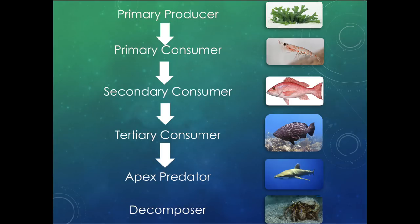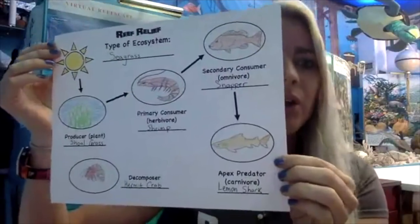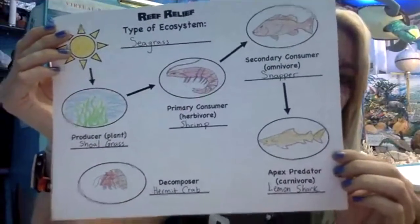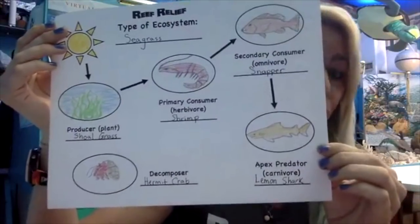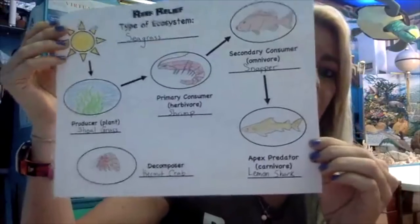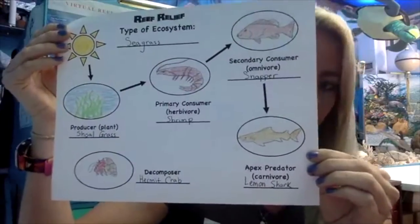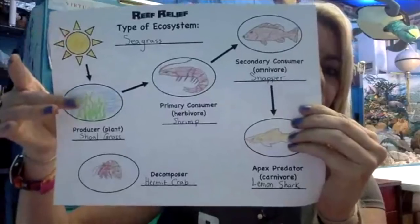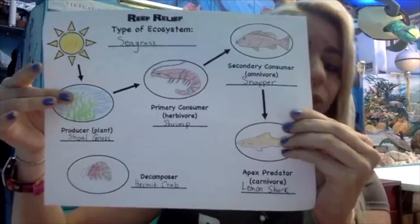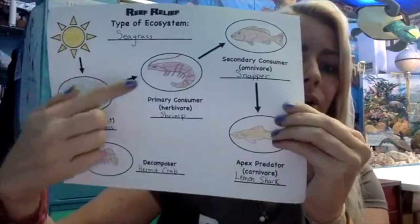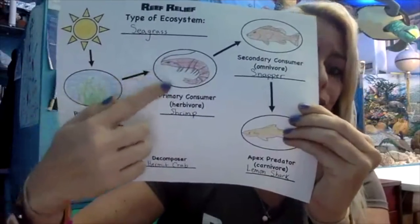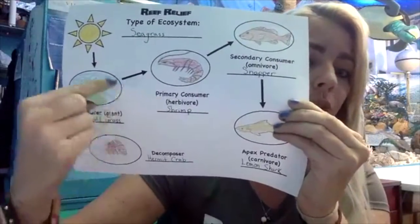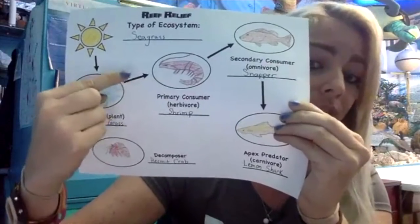Let's move on to working on this worksheet. I chose to do a seagrass ecosystem, and my producer is shoal grass, which is a type of seagrass. If you're doing a forest ecosystem, you won't have a shark on there, so make it realistic. My primary producer is shoal grass — it photosynthesizes and creates energy from the sun. Then I have my primary consumer, usually an herbivore: I put a shrimp, which consumes the seagrass. Only 10% of the energy goes to each level, so every time you see these arrows, that means 10% energy transfer.